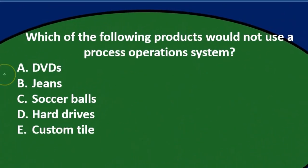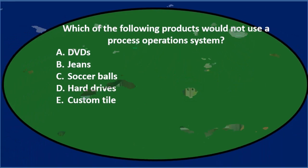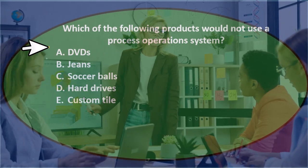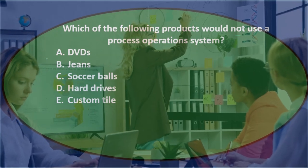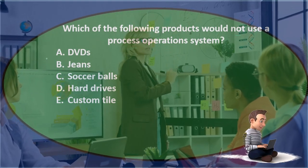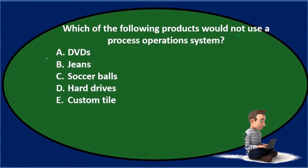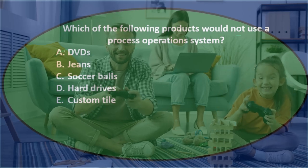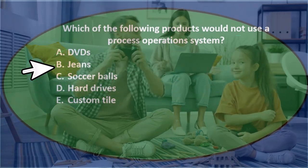We're looking for items that would NOT use a process cost system — in other words, items using a job cost system. DVDs are all pretty much the same; once you know what's on the DVD, you'd just process those, and you could think of a machine doing that easily. Anything a machine can do well without help is usually using a process cost system, so DVDs would not be our answer.